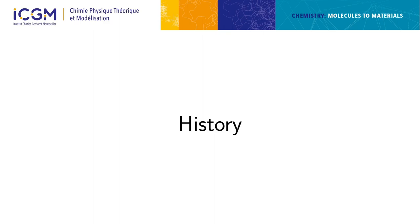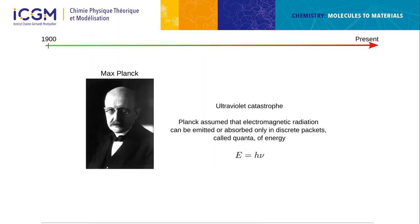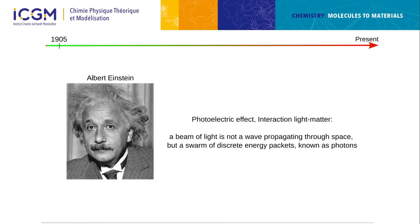Quantum mechanics started in the early 19th century with the ultraviolet catastrophe, which was not explained by classical theory. To explain it, Planck had to assume that electromagnetic radiation was emitted or absorbed in discrete packets he called quanta of energy. Then Albert Einstein, five years later, explained the photoelectric effect by discretization, saying that light consists of discrete energy packets we now know as photons.